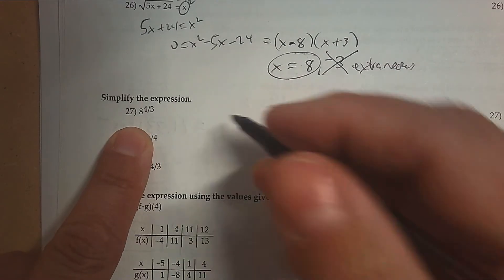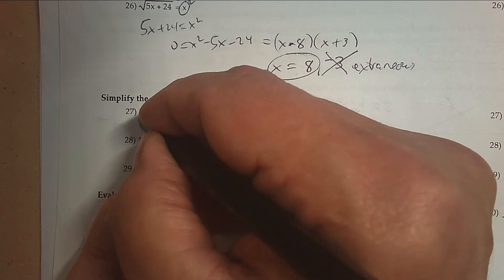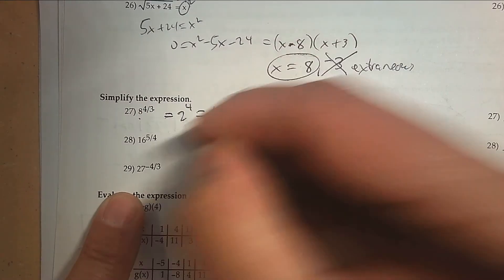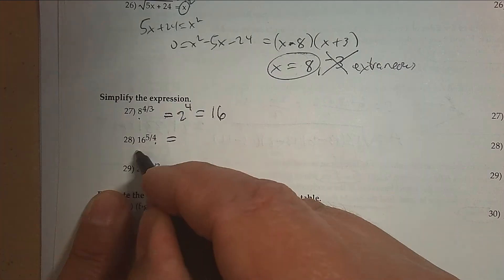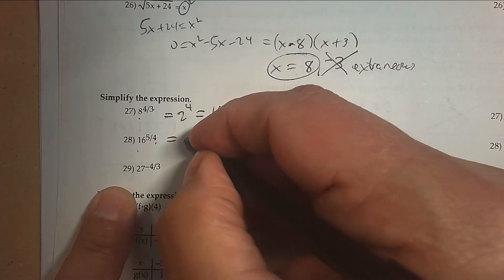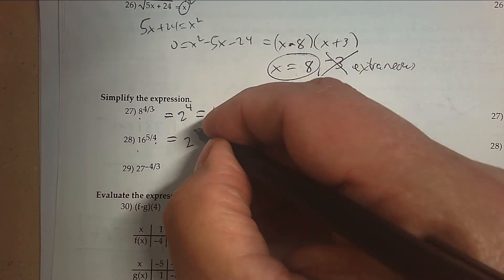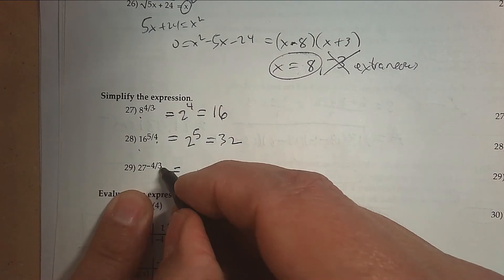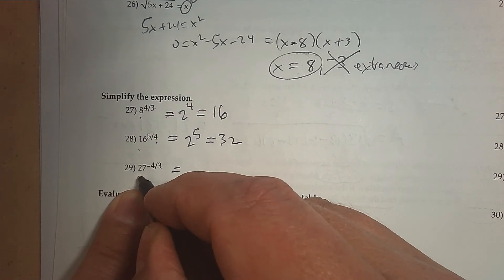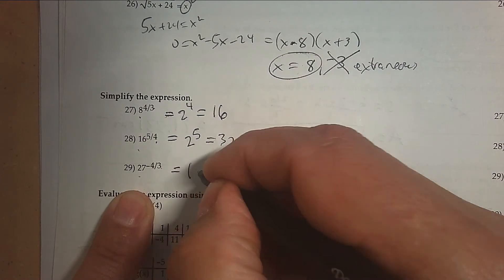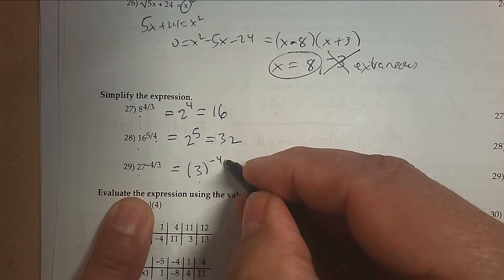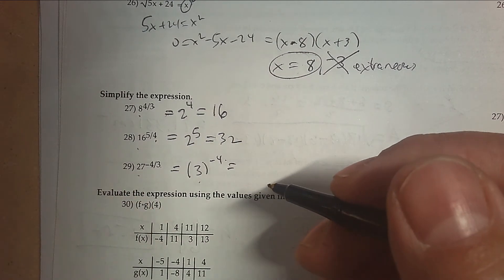Do you know how to simplify a rational exponent? What this means is: what's the cube root of 8, which is 2, and then take that answer to the 4th, which is 16. What's the 4th root of 16? What number times itself 4 times equals 16? Take that answer to the exponent 5 and you get your answer. Here: what's the cube root of 27? That answer is 3. Then 3 to the exponent 4 is 3 × 3 × 3 × 3 = 81. And then the negative exponent says to take the reciprocal of that.